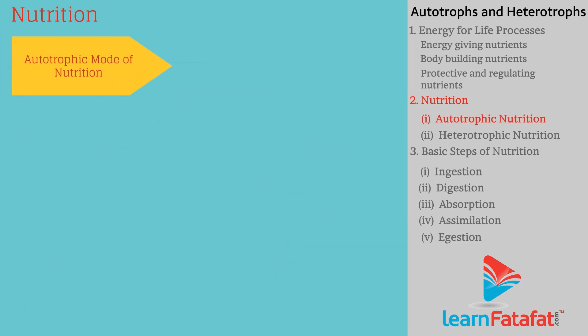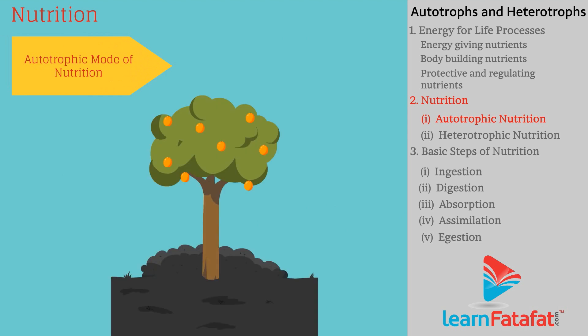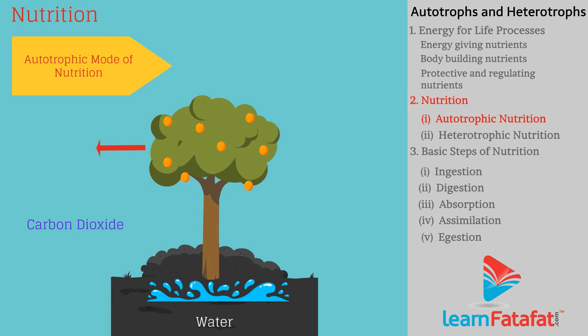Autotrophic mode of nutrition: Autotrophic nutrition is the mode of nutrition in which organisms produce their own food by using simple inorganic substances. For example, most plants are autotrophs. Plants prepare their food by the process called photosynthesis.